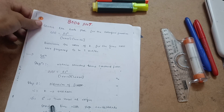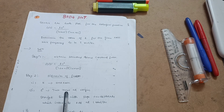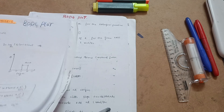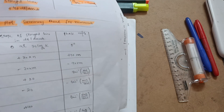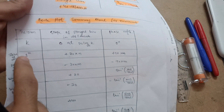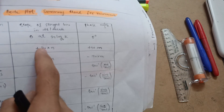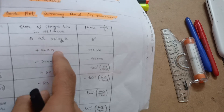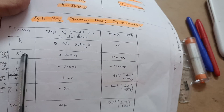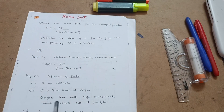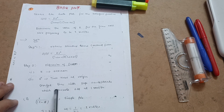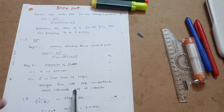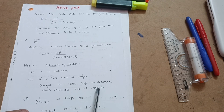You have to remember the chart I explained in the first video. For a zero at origin with s raised to power 2, you take 20×2 = 40, giving a straight line with slope of positive 40 dB/decade, which intersects the 0 dB line at 1 radian per second. Always remember this condition.